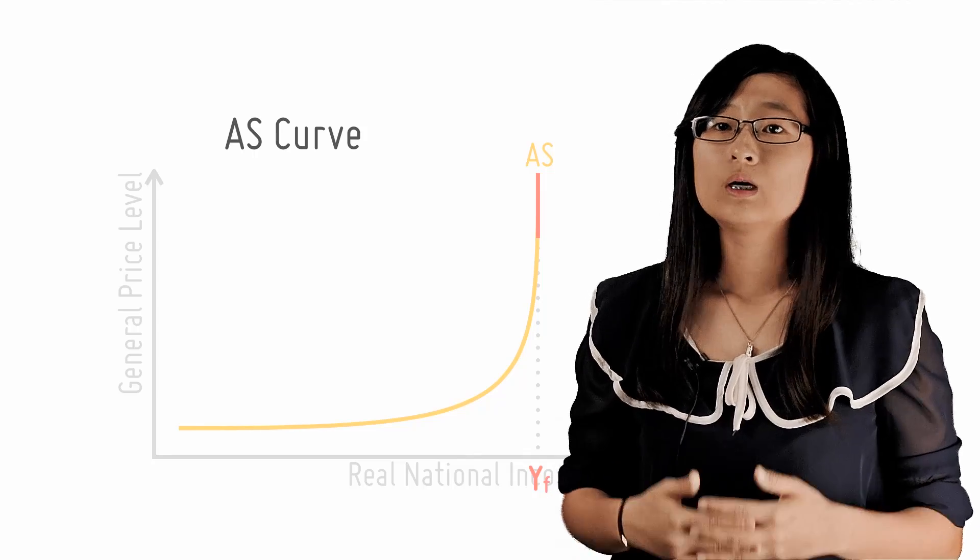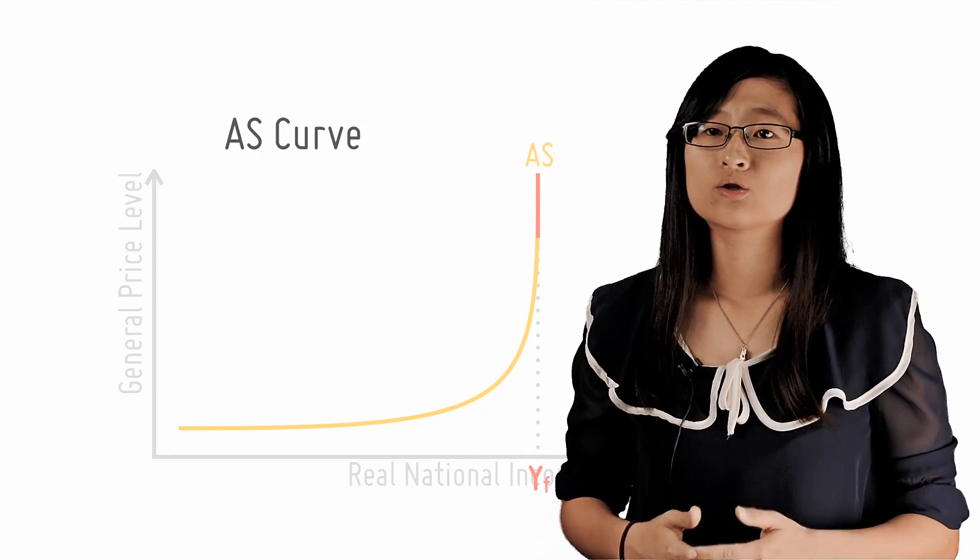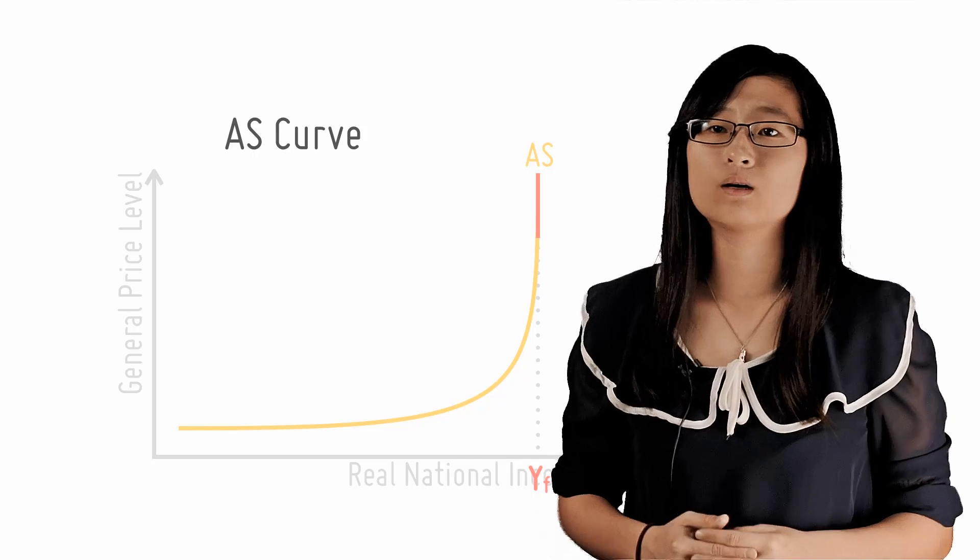Instead, when AD increases, the general price level rises. So supply is perfectly inelastic over this range.